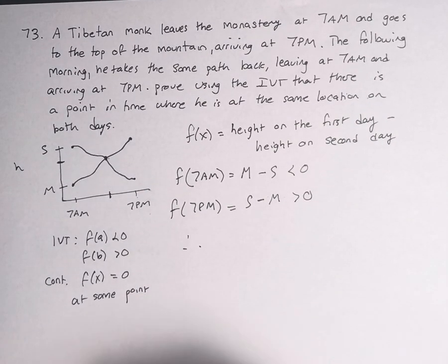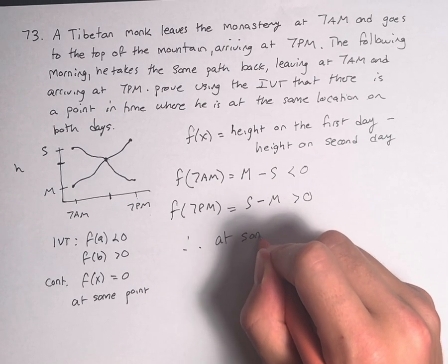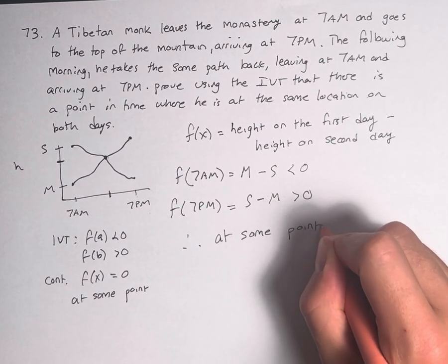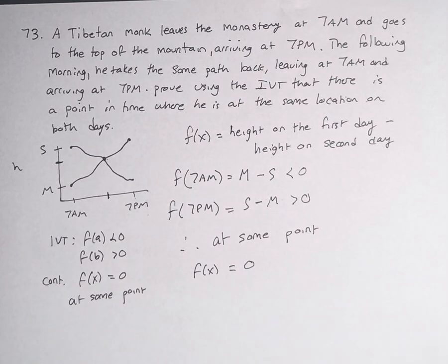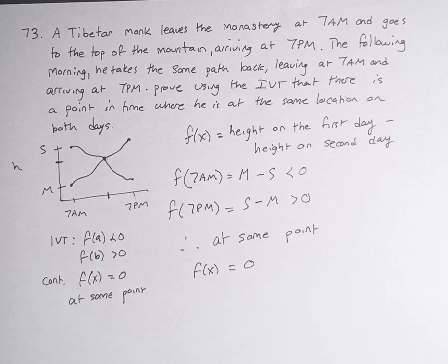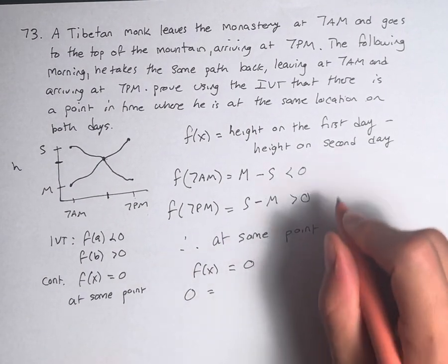Therefore, at some point, f(x) equals 0. Because it's continuous and it's going from negative to positive, at some point it has to equal 0.